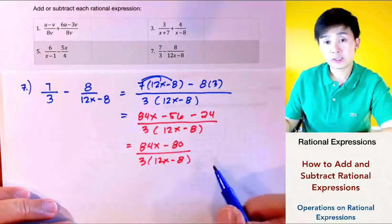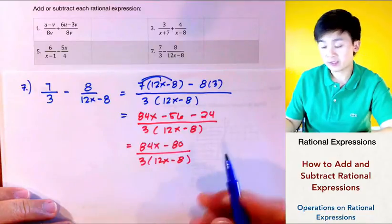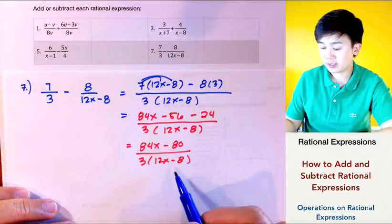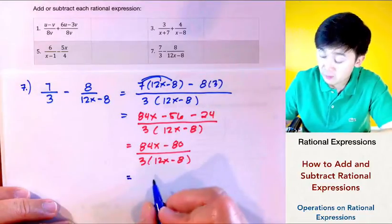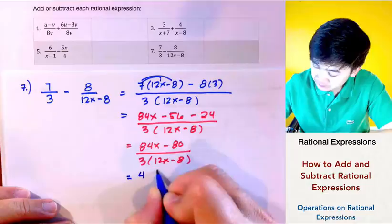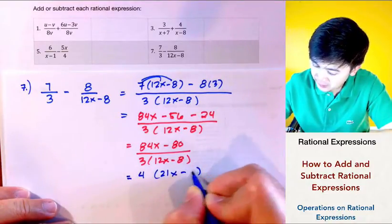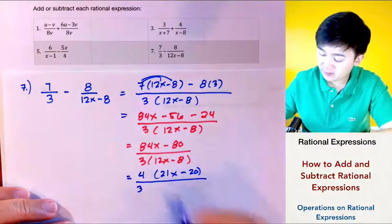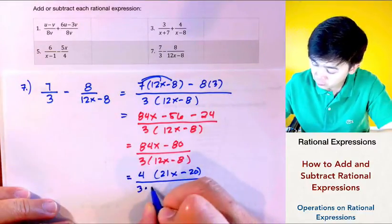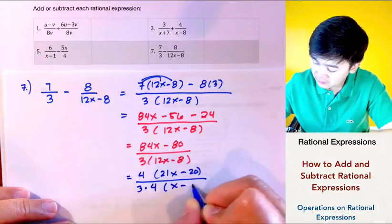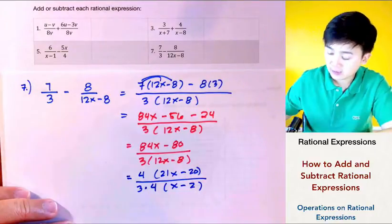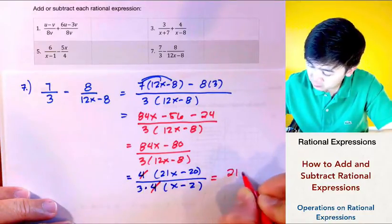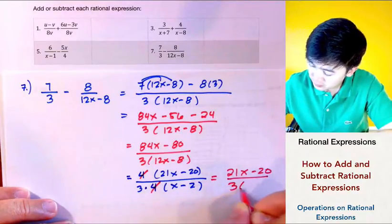Before finalizing the answer, notice that the numerator can still be factored, as well as 12X minus 8, by their GCF. The greatest common factor of the numerator is 4, and for 12X minus 8 the GCF is also 4. Taking out 4 from the numerator leaves 21X minus 20 inside. Canceling the common factor of 4 from the denominator simplifies 12X minus 8 to 3 times X minus 2. So our final answer is 21X minus 20, all over 3 times X minus 2.